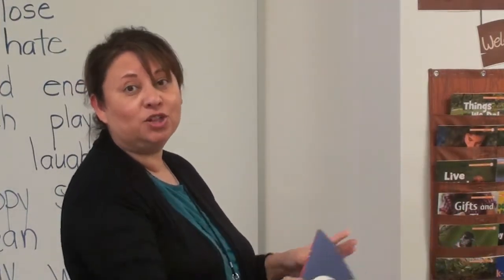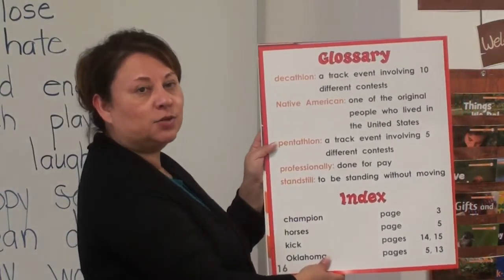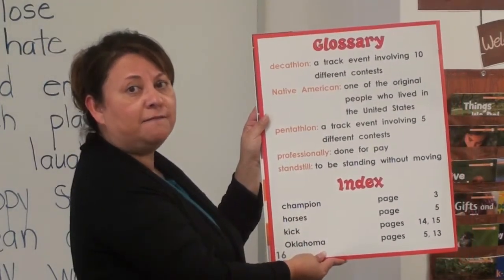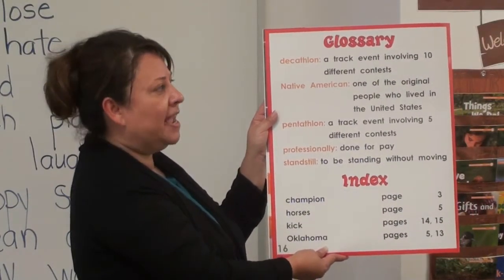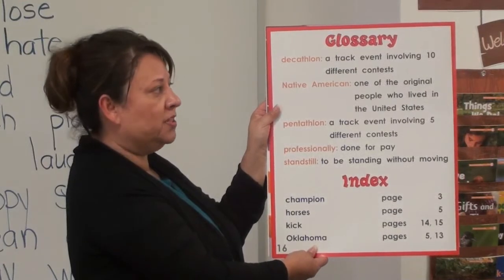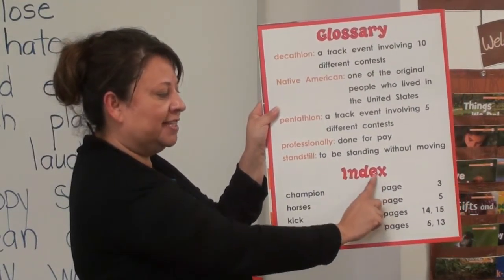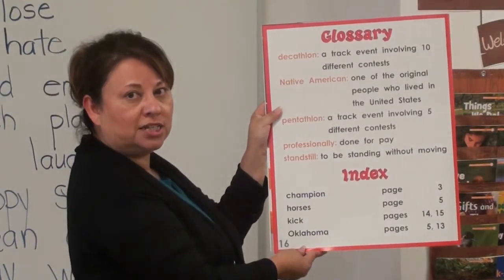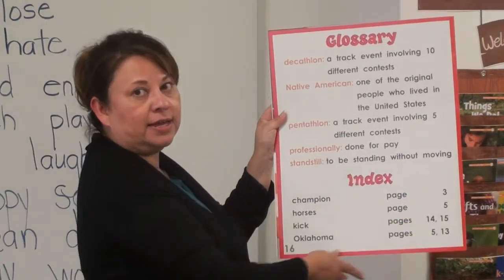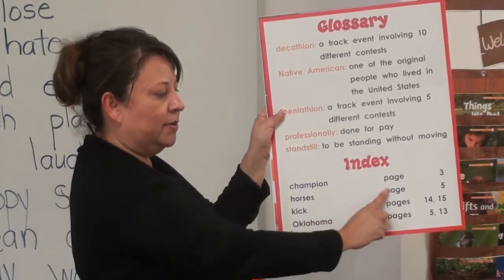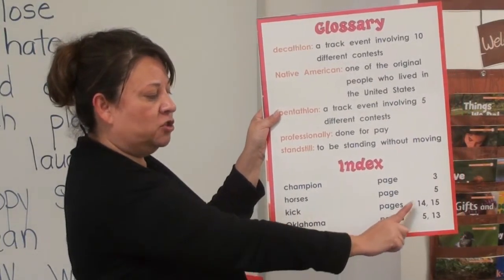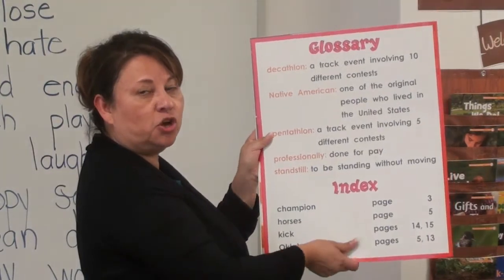That was a lot of information about Jim Thorpe. Now I want to take you to the glossary. The glossary is normally found in the back of a book that gives us facts — an informational book. We have some words we saw on cards this past week. We also have a section called the index. If I wanted to find out about a champion, I'd go to page 3. If I wanted to find out about horses, I'd go to page 5. If the word 'kick' appeared in the story, it did — on pages 14 and 15 — I could turn to those pages for more information.